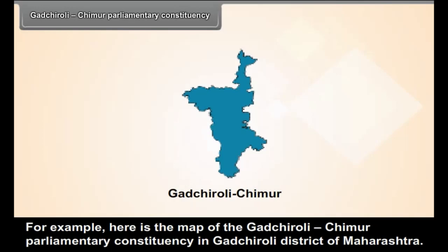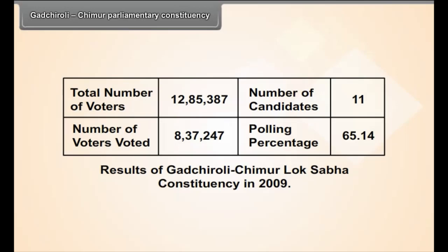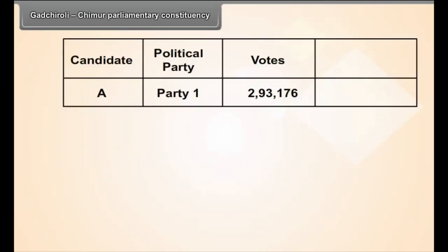For example, here is the map of the Gadchiroli-Chimur parliamentary constituency in Gadchiroli district of Maharashtra. It includes six legislative assembly constituencies within its area. Total number of voters: 12,85,387. Number of candidates: 11. Number of voters who voted: 8,37,247. Polling percentage: 65.14%.